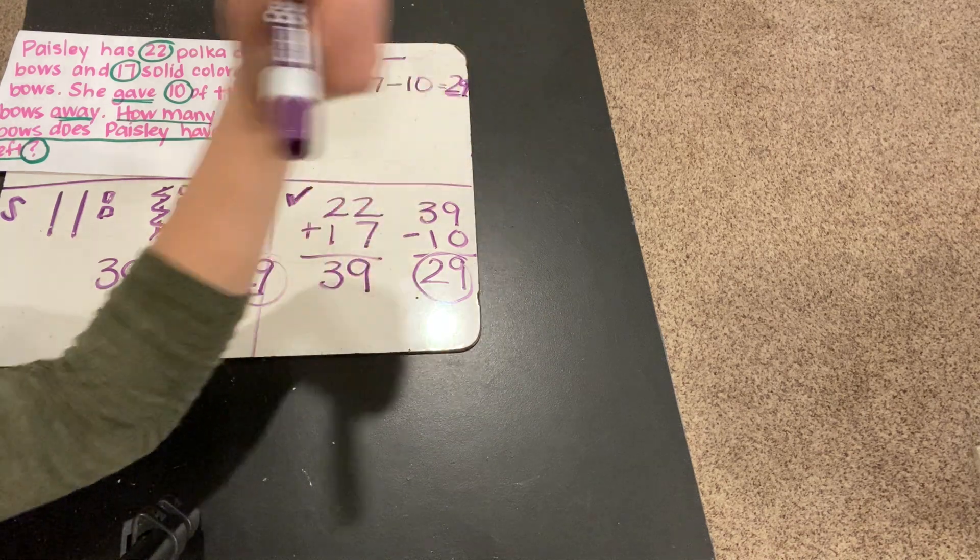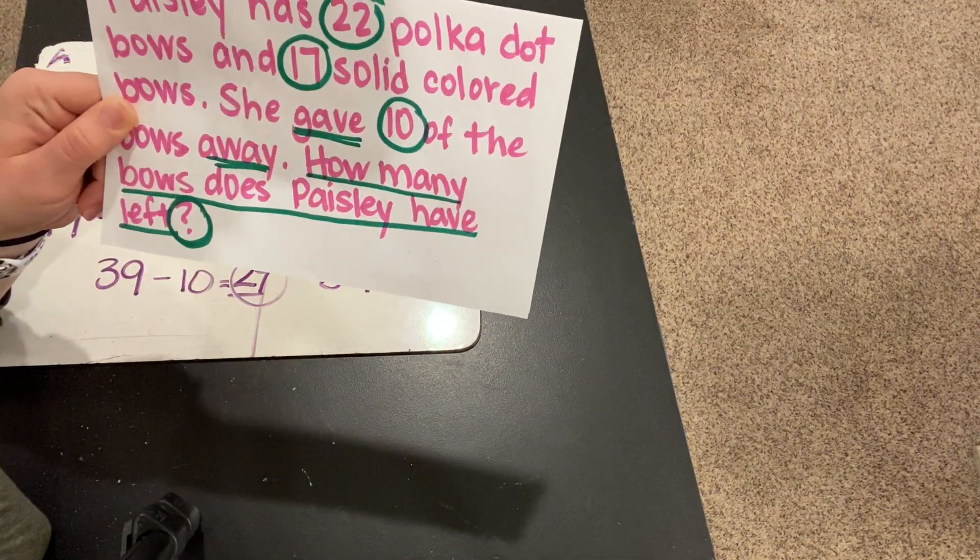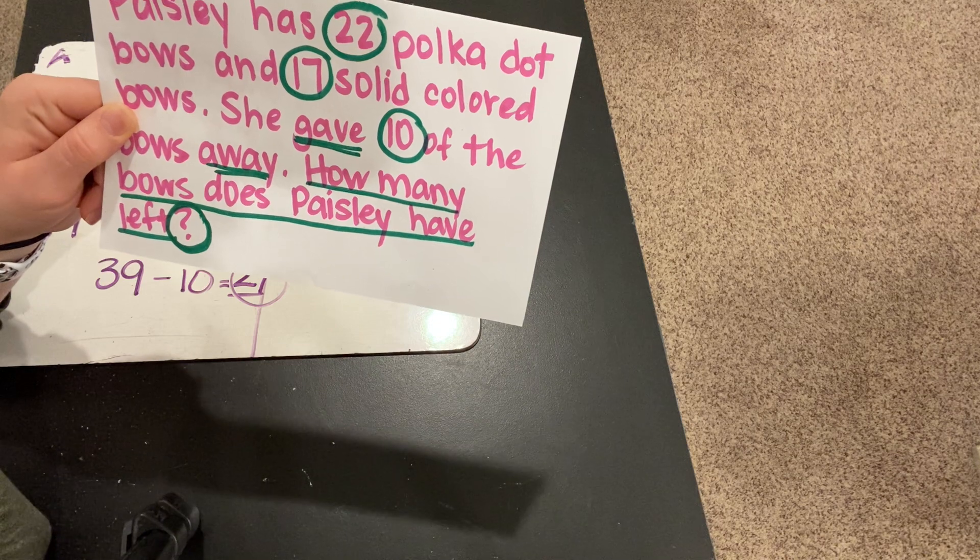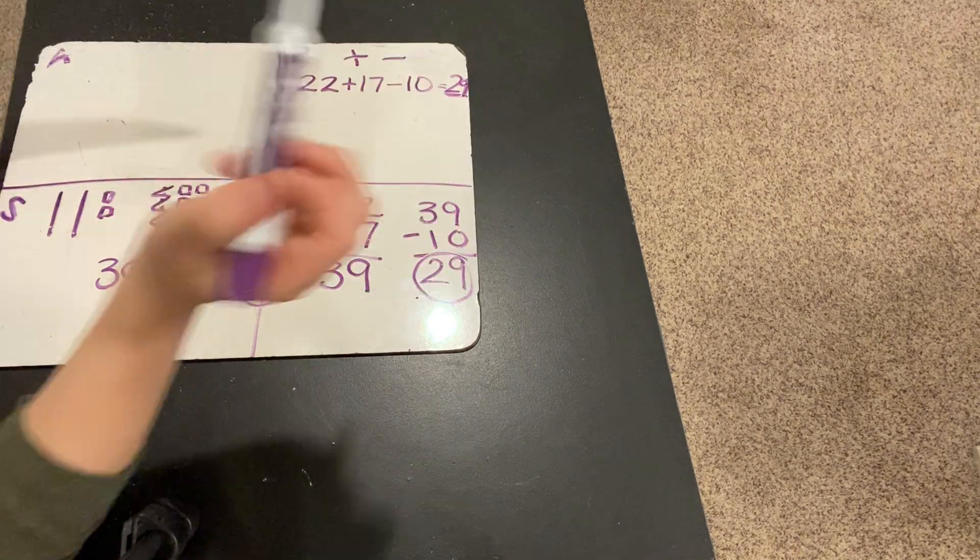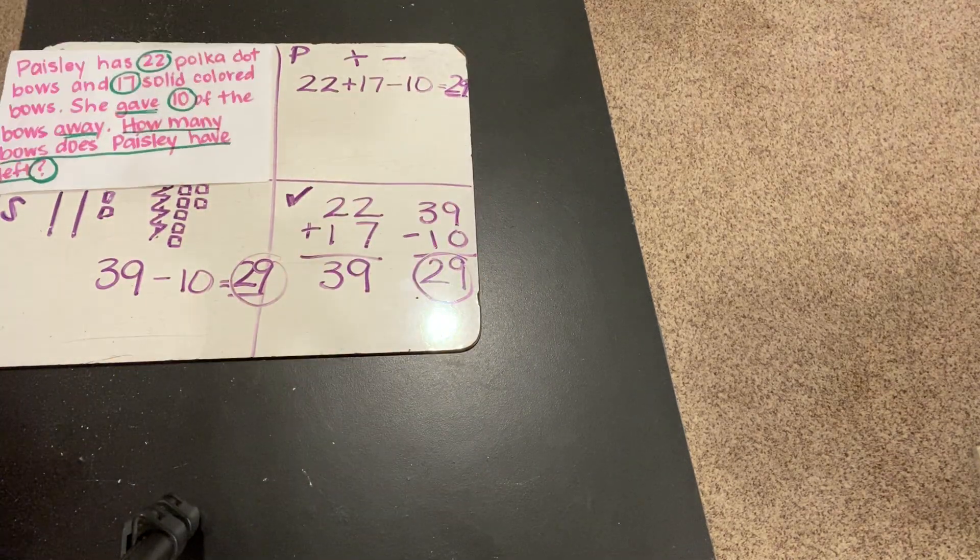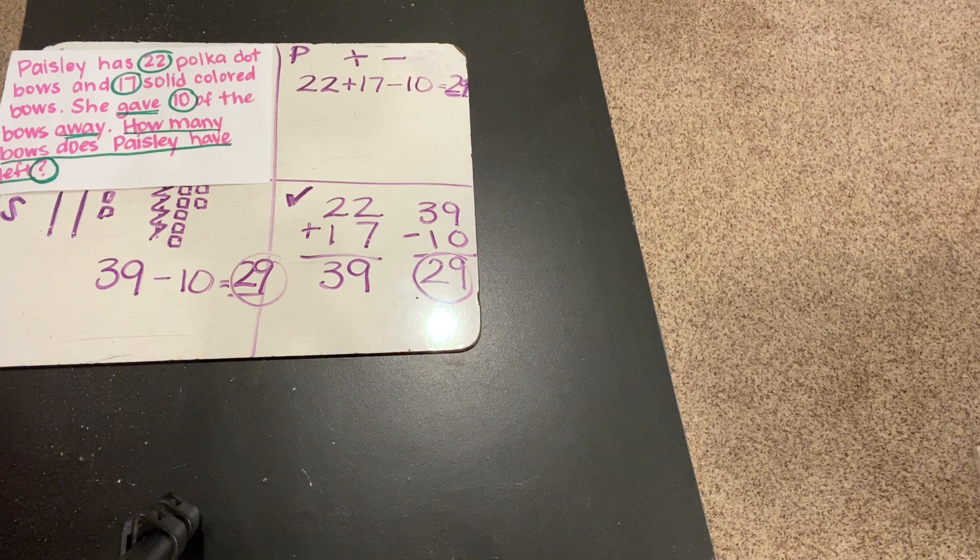So, we got 29 two different times. So, we can answer this question now. How many bows does Paisley have left? She has 29 bows. That's a lot of bows.